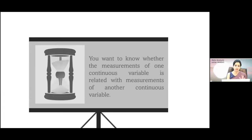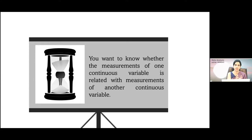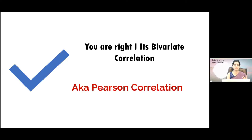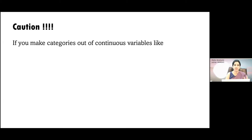The appropriate statistical test for two continuous variables is the Pearson correlation coefficient, named after Pearson. There is also Spearman correlation, available in both Jamovi and SPSS. One key assumption for Pearson correlation is that the data should be normally distributed. If you have ordinal data, you can apply Spearman correlation. There is also biserial correlation, but that will not be covered here.